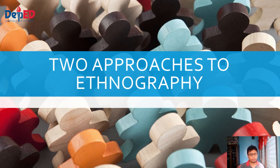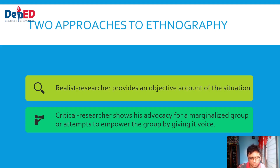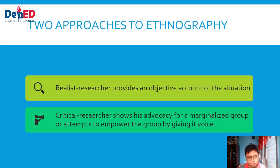Two approaches to ethnographic research: First, the realist researcher provides an objective account of the situation — what is happening around you. Second, the critical researcher advocates for a marginalized group or attempts to empower that group by giving it a voice. For example, documentaries can be realist — just showing what is happening — or critical, like showing the lives of farmers and why they are not being helped. Those are the two approaches for ethnographic research.